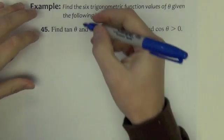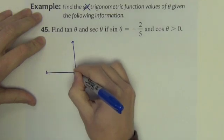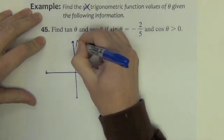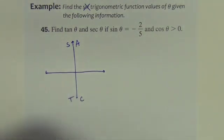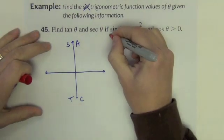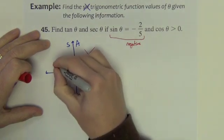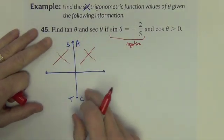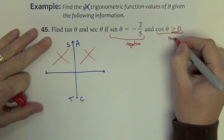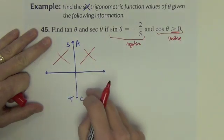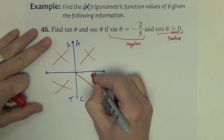Next example. The first thing we need to do is determine where this angle is. All Students Take Calc. We're told that sine is negative — so it can't be in quadrant 1 or 2 where sine is positive. We're also told that cosine is positive. Of the two remaining quadrants, cosine is only positive in quadrant 4, so the triangle lives in quadrant 4.